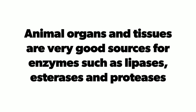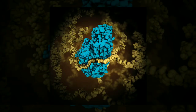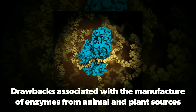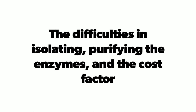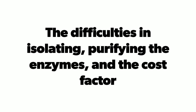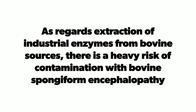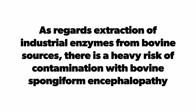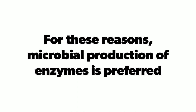Animal organs and tissues are very good sources for enzymes such as lipase, esterase, and protease. The enzyme lysozyme is mostly obtained from hen eggs. Some plants are excellent sources for certain enzymes, such as papain and bromelain. However, there are drawbacks: difficulties in isolating and purifying the enzymes, high cost, and a heavy risk of contamination with bovine spongiform encephalopathy from bovine sources. For these reasons, microbial production of enzymes is preferred.